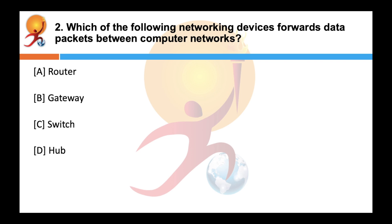Which of the following networking devices forwards data packets between computer networks? Correct answer is a router. A router is a networking device that forwards data packets between computer networks and performs the traffic directing functions on the internet.